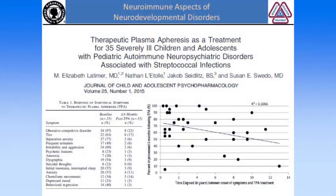Another study recently published by Dr. Swedo and Latimer was a case series over many years looking at 35 severely ill children with PANDAS who underwent plasmapheresis. At six months post-plasmapheresis, symptoms improved dramatically. Interestingly, the time between symptom onset and plasmapheresis predicted improvement — the sooner the treatment was given, the better the outcome for the child.